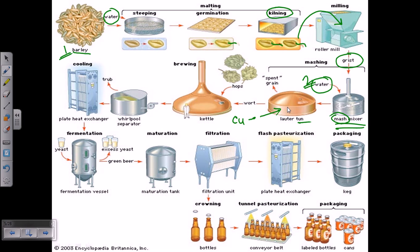Once everything has been in the lauter tun for some time, they transfer it into what we call a kettle, also made of copper. It is a giant kettle with a typical chimney-like structure at the top, though the top region is sealed. The mixture taken from the lauter tun into the kettle is called wort. So the terminologies are: mash, then wort.